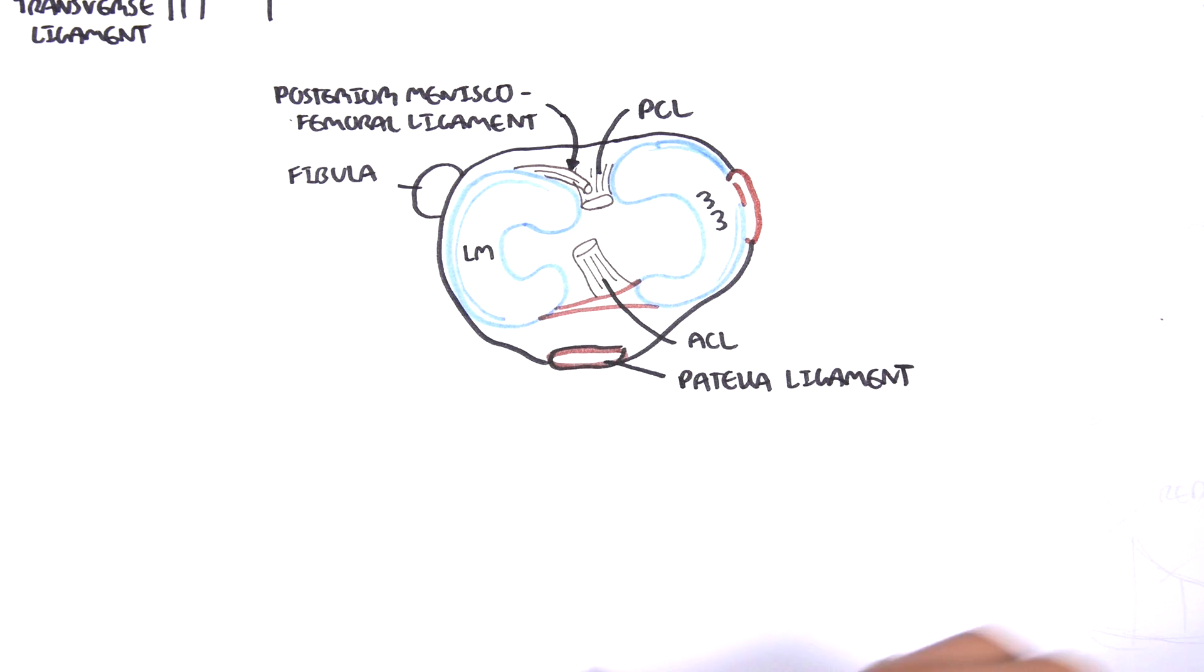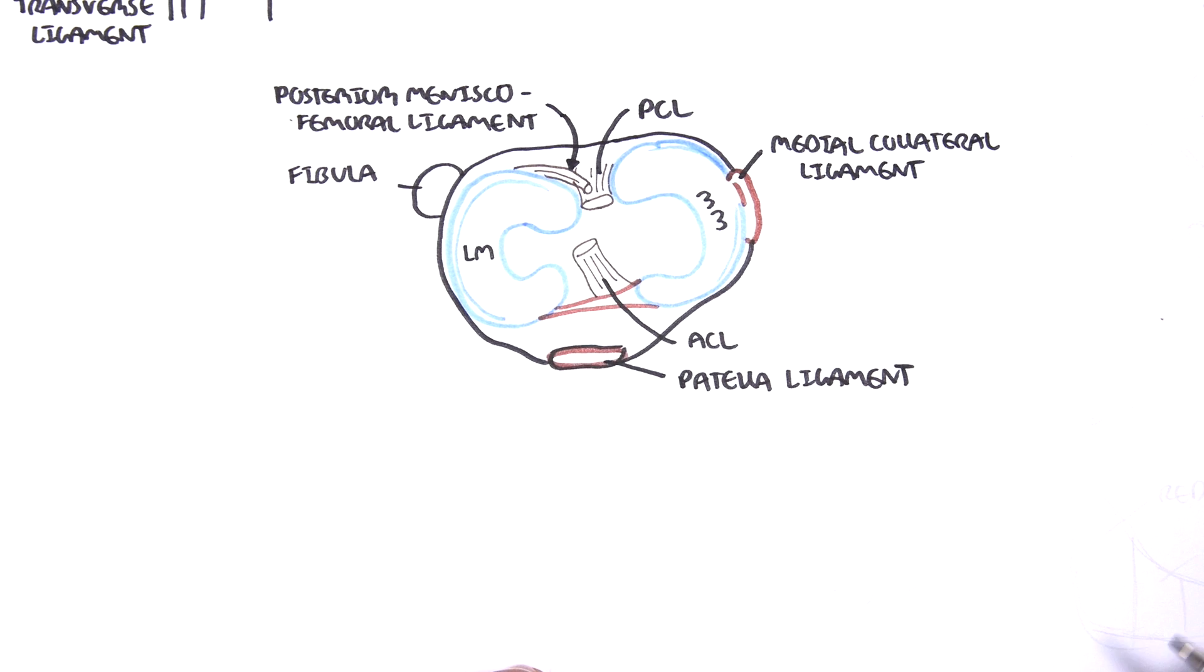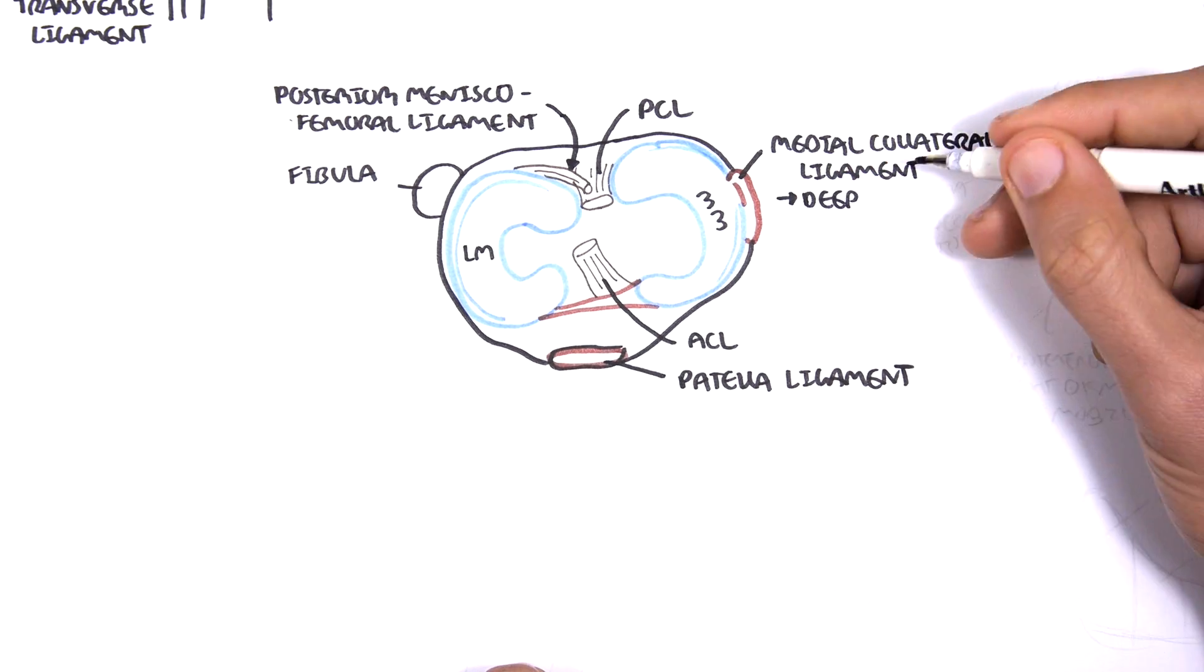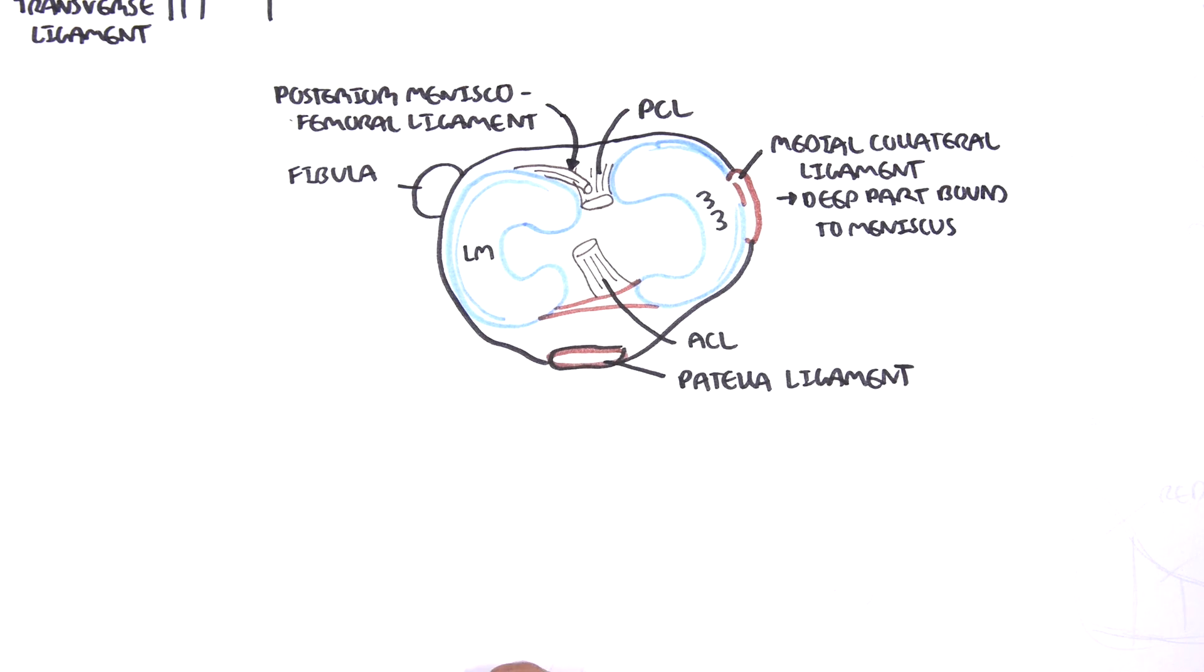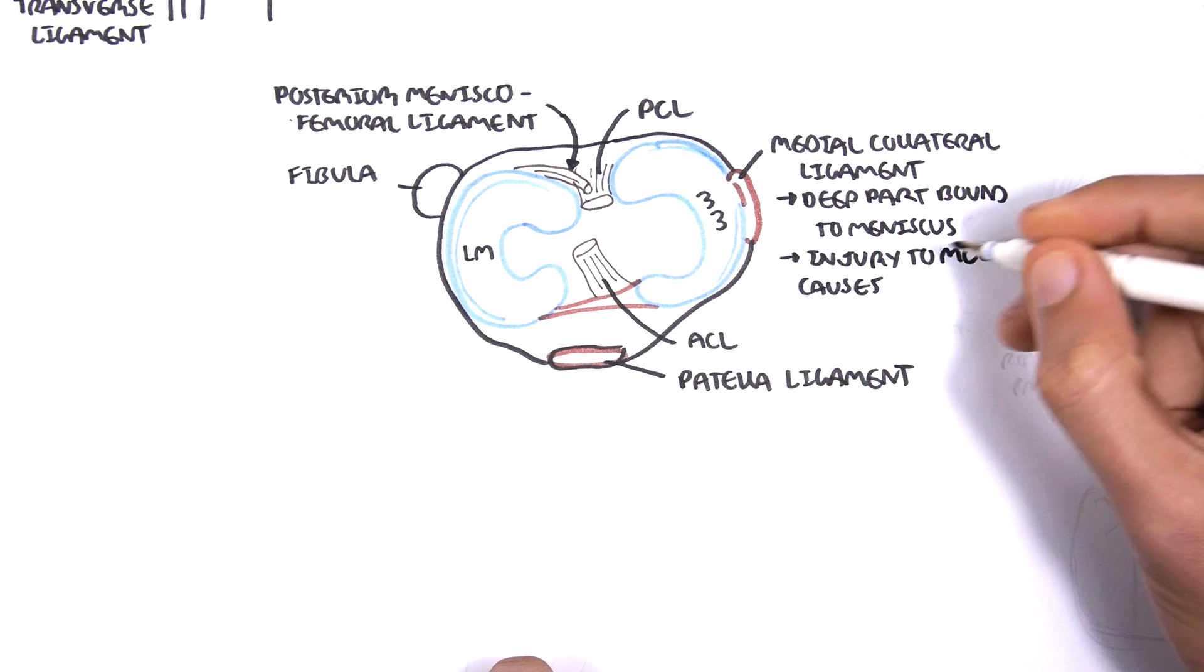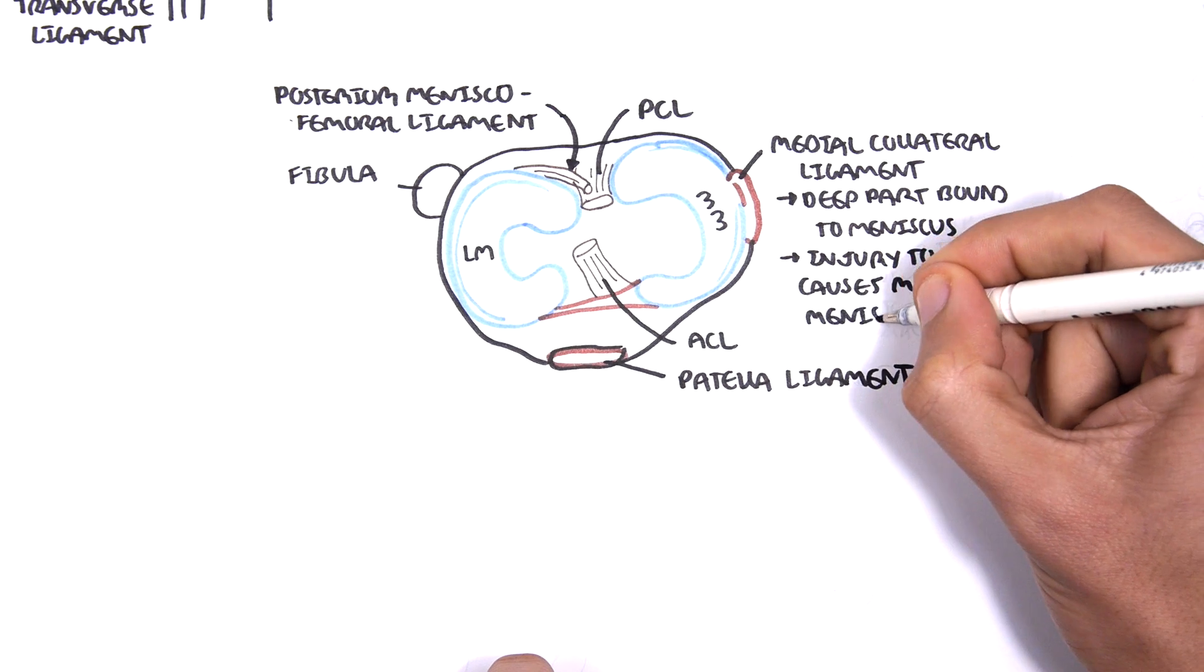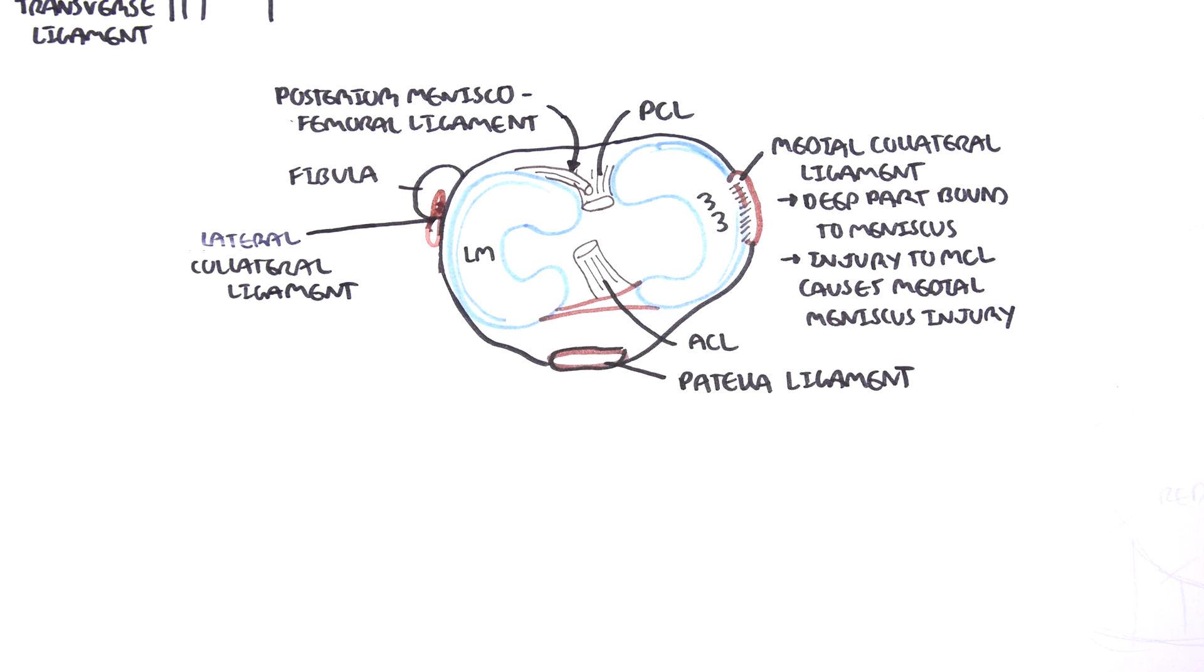The medial collateral ligament is quite important because it has a deep and superficial layer. The deep part of the medial collateral ligament joins actually with the medial meniscus. This means that injury to the medial collateral ligament can cause medial meniscal injury as well.